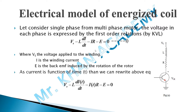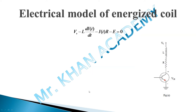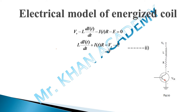In this equation, I is a function of time T, so we rewrite it as: VS − L(di/dt) − I(T)·R − E = 0. For simplification, we shift the supply voltage and back EMF to one side and the remaining terms to the other. Then VS − E is the resultant voltage, which we call V. So going forward, instead of VS − E, we write V.